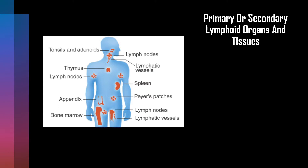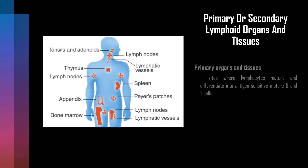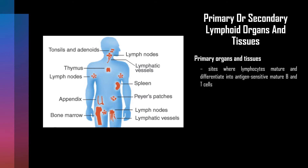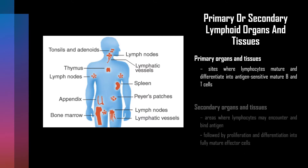The primary organs and tissues are where immature lymphocytes mature and differentiate into antigen-sensitive B and T cells. The thymus is the primary lymphoid organ for T cells, and bone marrow is the primary lymphoid tissue for B cells.